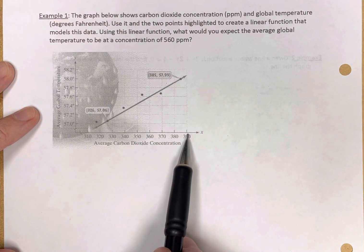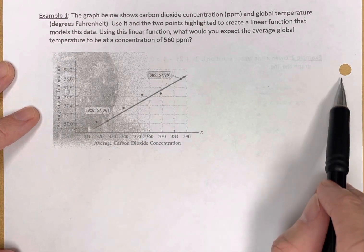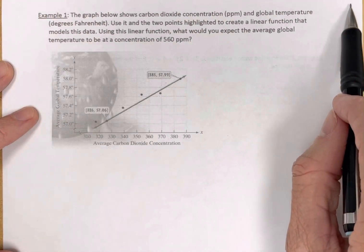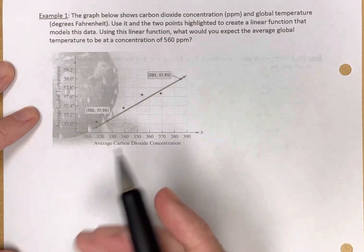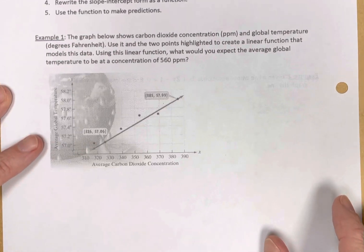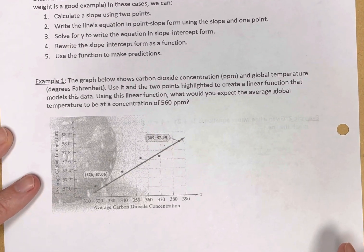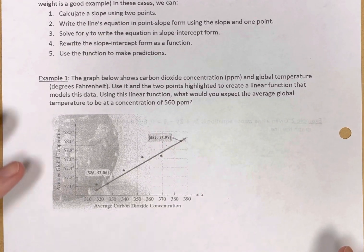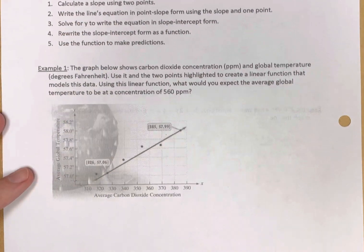Well this graph goes to 390s, so 560s way out here and that'll be up here somewhere is my guess. So let's first remember our number one up here. We want to come up with this. We need the slope. So let's find the slope.